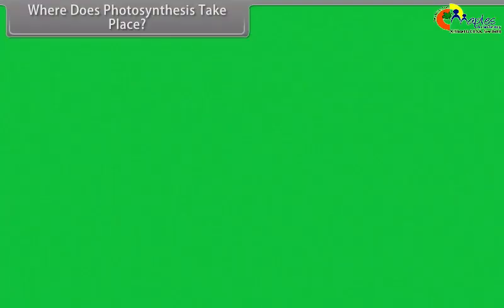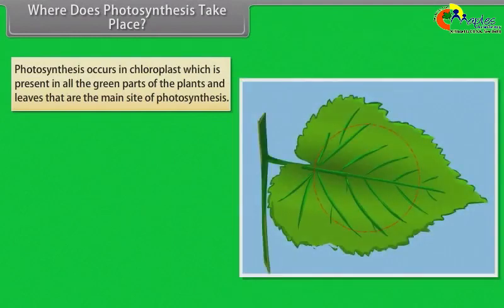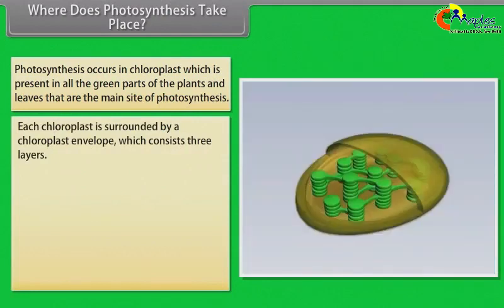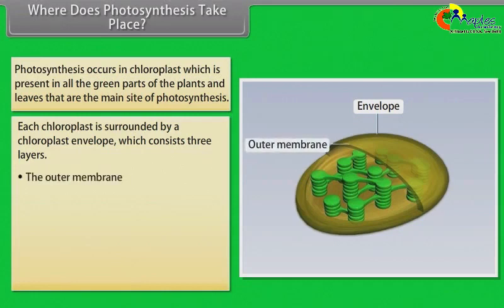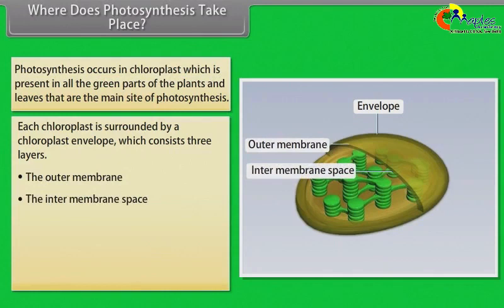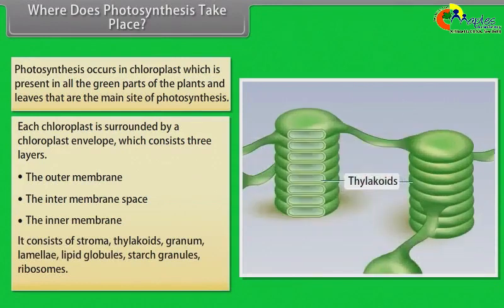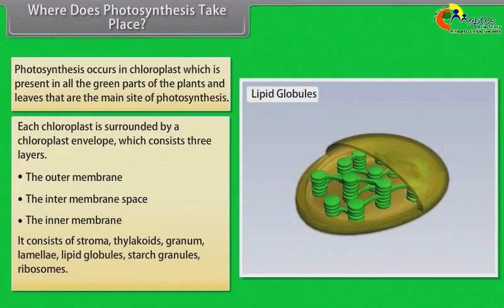Where does photosynthesis take place? Photosynthesis occurs in chloroplast, which is present in all green parts of plants. Leaves are the main site of photosynthesis. Each chloroplast is surrounded by a chloroplast envelope consisting of three layers: outer membrane, intermembrane space, and inner membrane. It consists of stroma, thylakoids, granum, lamellae, lipid globules, starch granules, and ribosomes.